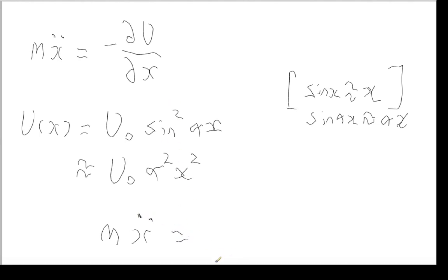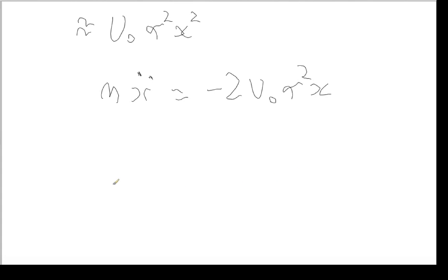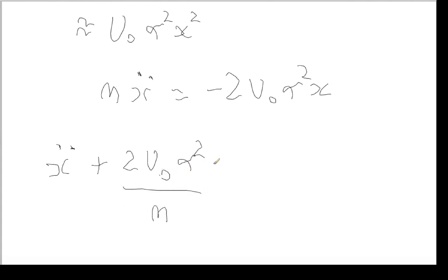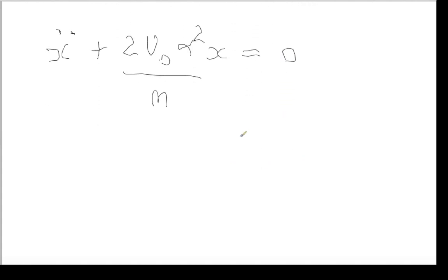Taking the negative derivative of U₀α²x² from Newton's second law gives minus 2U₀α²x. Rearranging that into the standard form, we get this second-order differential equation.